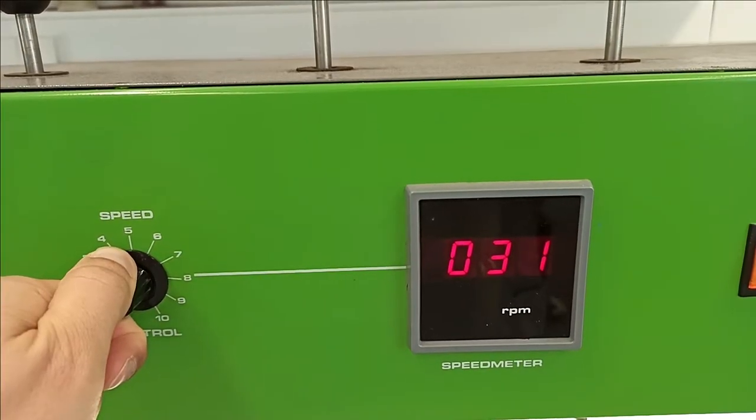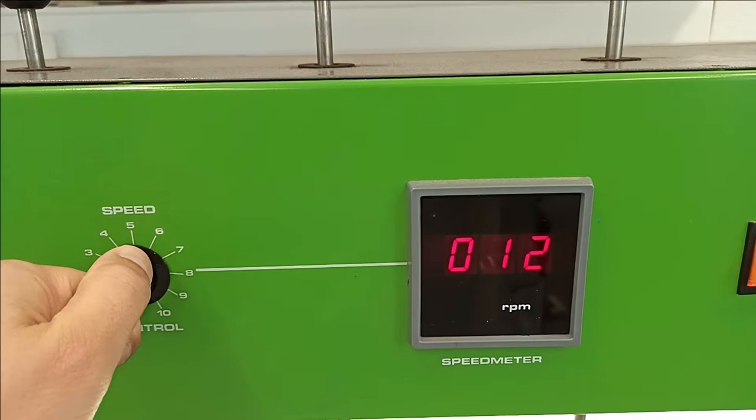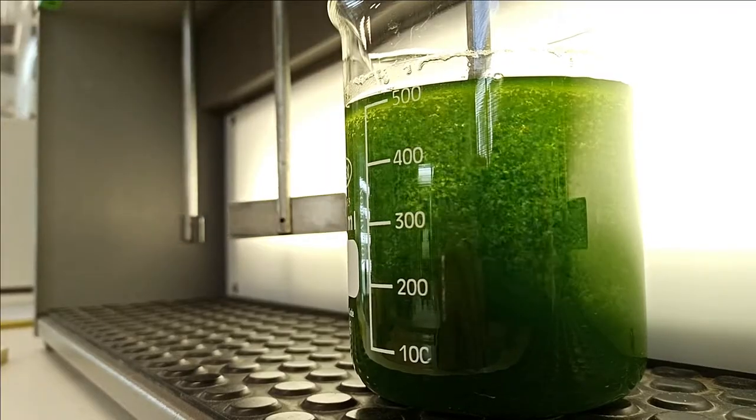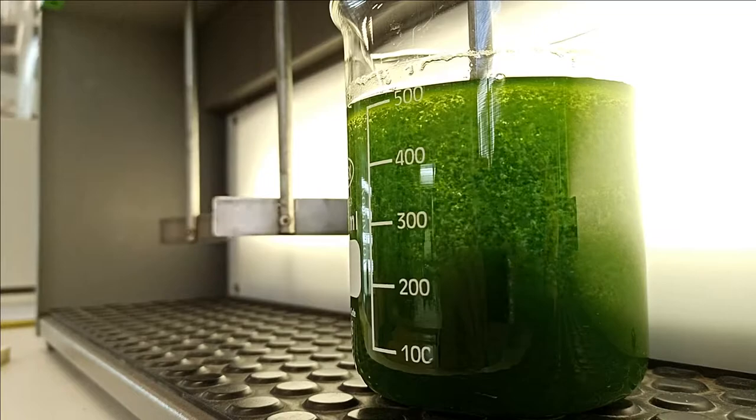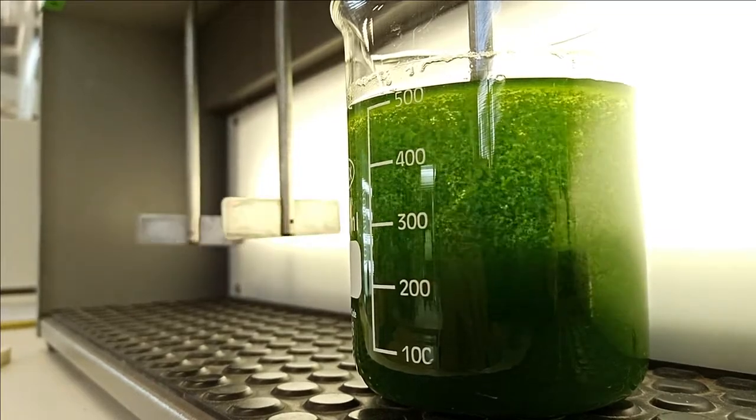After 1 minute adjust mixing to 15rpm for 3 minutes. During this time the low agitation speed allows coagulated cells to aggregate into flocs.